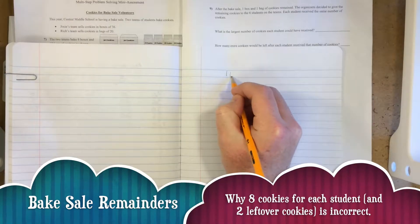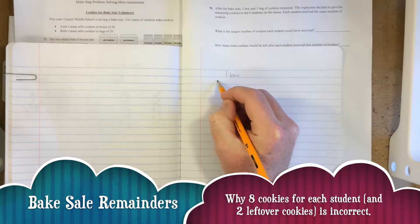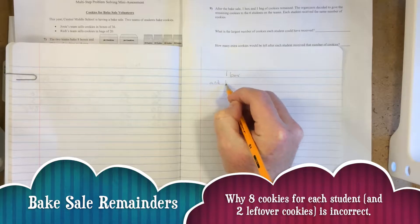One box and one bag remain, so we need to figure out the total number of cookies in there and then divide them among the six students.